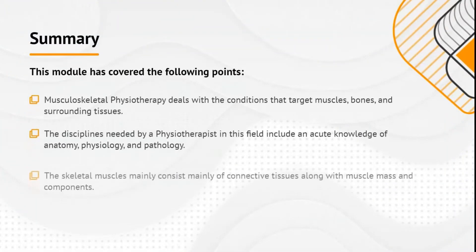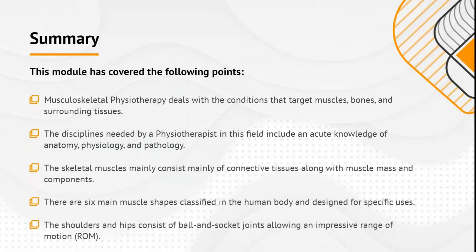Summary: this module has covered the following points. Musculoskeletal physiotherapy deals with the conditions that target muscles, bones, and surrounding tissues. The disciplines needed by a physiotherapist in this field include an acute knowledge of anatomy, physiology, and pathology. The skeletal muscles mainly consist of connective tissues along with muscle mass and components. There are six main muscle shapes classified in the human body and designed for specific uses. The shoulders and hips consist of ball and socket joints allowing an impressive range of motion.